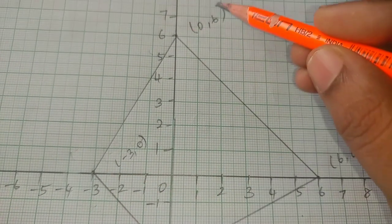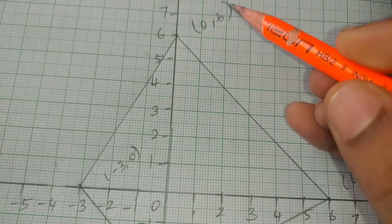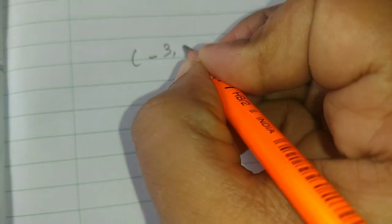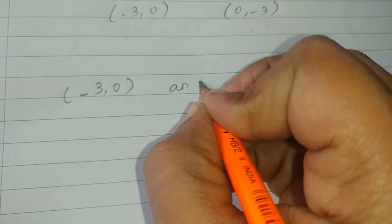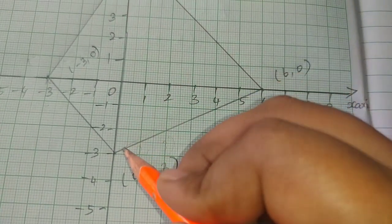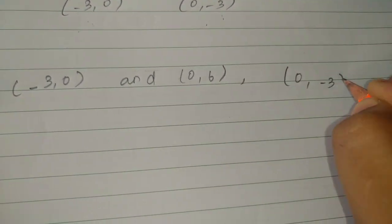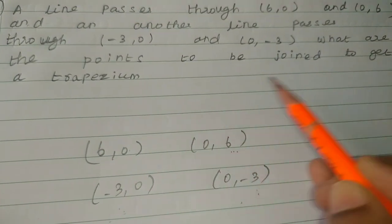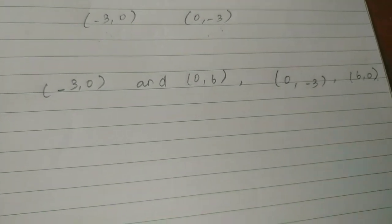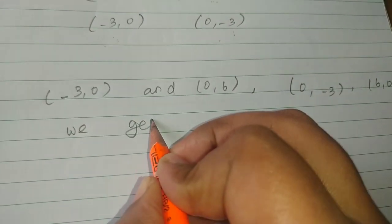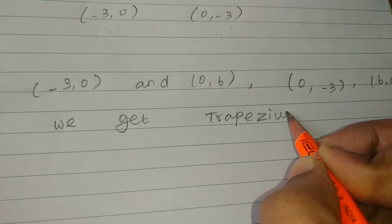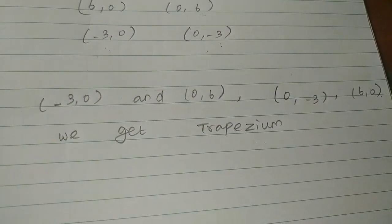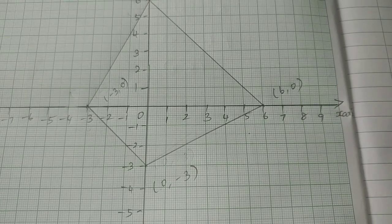What are the points to be joined to get a trapezium? Join (-3,0) and (0,6) as one pair. Next pair: (0,-3) and (6,0). When we join these points, we get a trapezium. So, clear? You will get the trapezium. Thank you.